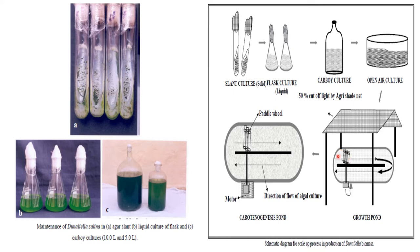The raceway pond consists of a paddle wheel whose rotation helps agitate the cell culture so that all cells get a uniform amount of nutrients, carbon dioxide, and light. If agitation stops, cells settle down — only the upper layer gets carbon dioxide, nutrients, and light, while the cells at the bottom cannot receive proper gas concentration, nutrients, or sunlight.